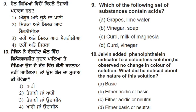Which set of substances contains acids? Options include grapes and lime water, vinegar and milk of magnesia, and curd and vinegar. Lime water is not acidic; milk of magnesia is not acidic. Curd is acidic and vinegar is acidic, so the correct answer is curd and vinegar — the fourth option.